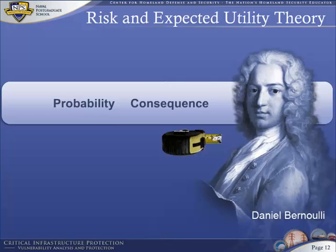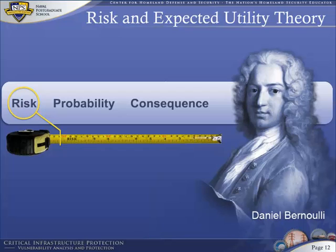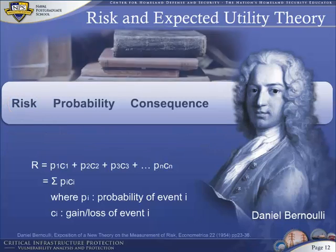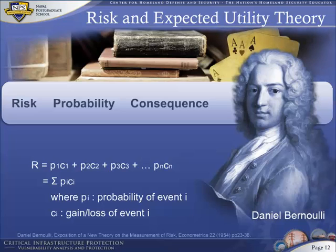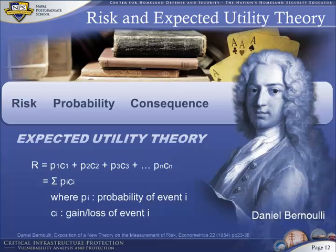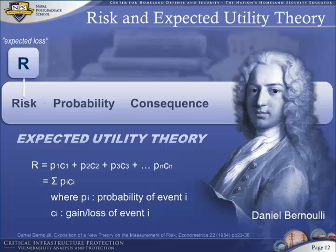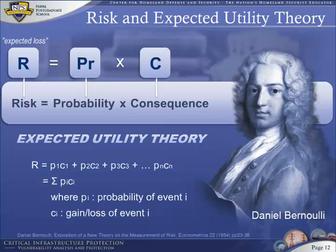If we can measure probability and consequence, we can calculate risk using Daniel Bernoulli's formula. Bernoulli was a member of a famous family of exceptional mathematicians, engineers, and scientists. His contribution is what we now call Expected Utility Theory, or EUT. Bernoulli defined risk as expected loss and calculated it as the sum of products — probability times consequence. Simply put, risk is the total expected loss obtained by summing individual expected losses over all events leading to consequences. Finding probabilities and consequences sometimes becomes more difficult than it appears.